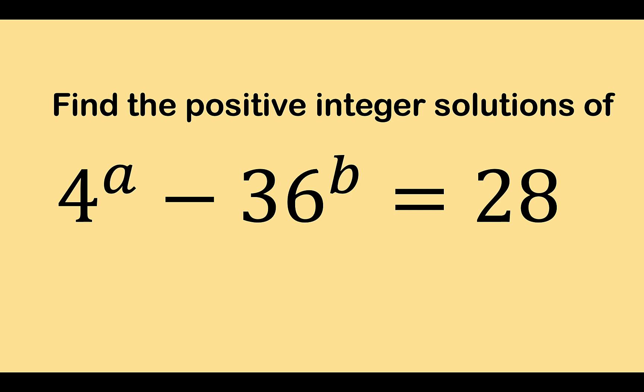Hi everyone, here's our math problem for today. Find the positive integer solutions of 4 raised to a minus 36 raised to b equals 28.